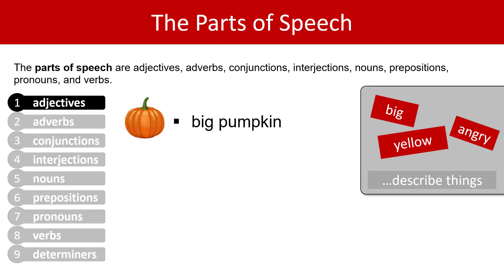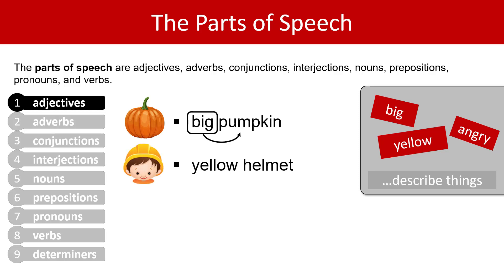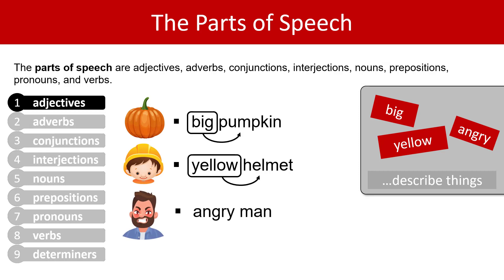Let me show you some examples. Big pumpkin — 'big' describes the word pumpkin. Yellow helmet — the word 'yellow', which is an adjective, describes 'helmet'. Angry man — the word 'angry', which is an adjective, describes 'man'. So you can see that adjectives describe things.